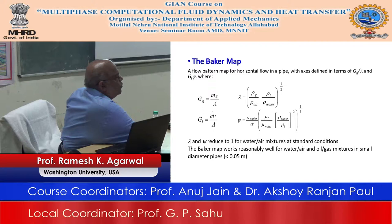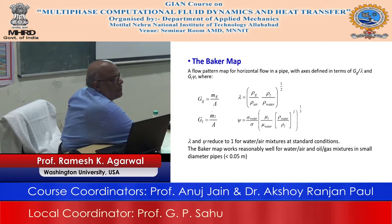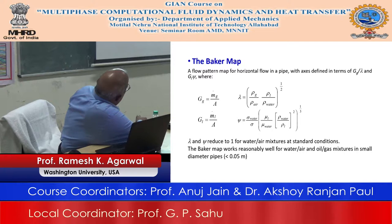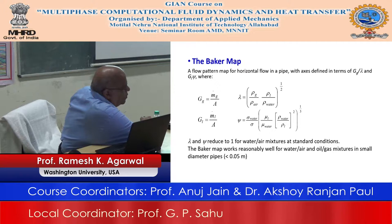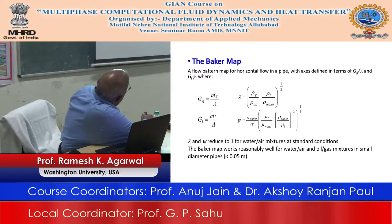This type of chart is called the Baker map, after the person who created it. It shows a gas-based flux as one parameter and a liquid-based flux as the other. You can calculate these for a given pipe with various superficial velocities as input, and depending on the values of the gas and liquid fluxes, you can determine what flow pattern you will get.